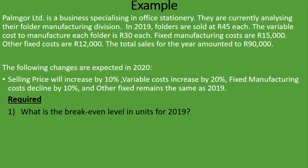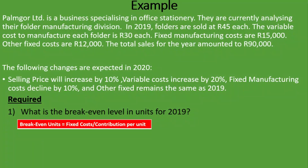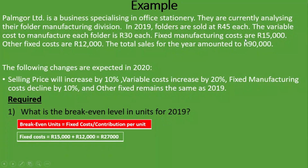So how do we calculate the break-even level in units for 2019? Here's the formula: break-even units equals fixed costs divided by the contribution per unit. What is our fixed costs? We are told that fixed manufacturing costs are R15,000 and other fixed costs are R12,000. Adding them together gives us total fixed costs of R27,000, which is the fixed cost we are going to divide by the contribution per unit.